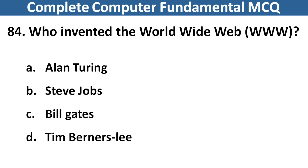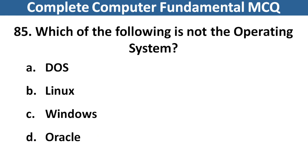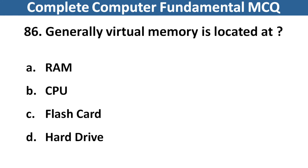Who invented the World Wide Web? Right answer is option D, Tim Berners-Lee. Next question: Which of the following is not an operating system? Right answer is option D, Oracle. Next question: Generally virtual memory is located at? Right answer is option A, RAM.